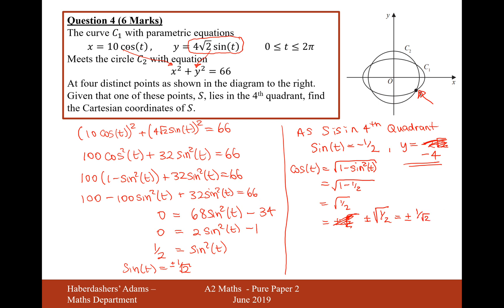So now the cos one wants to be positive because the value of the x-coordinate is positive on this graph here. So therefore, cos t is positive. So it would be positive 1 over root 2. So therefore, x is going to be 10 over root 2, so 5 root 2.